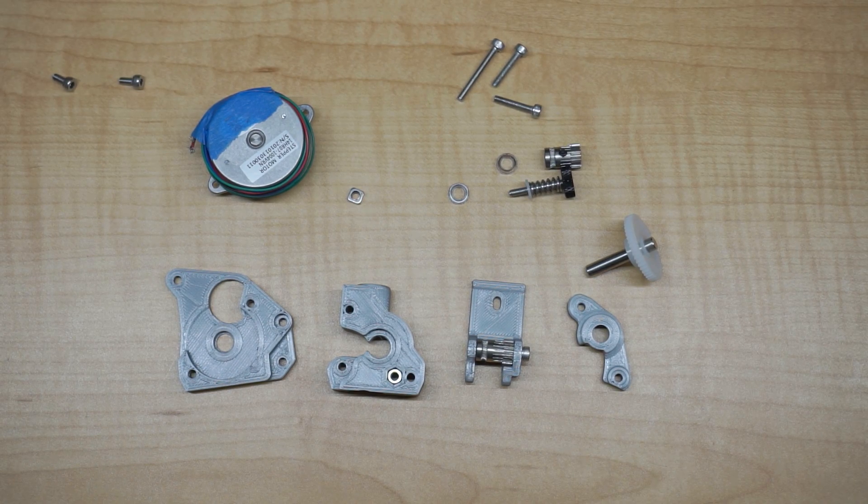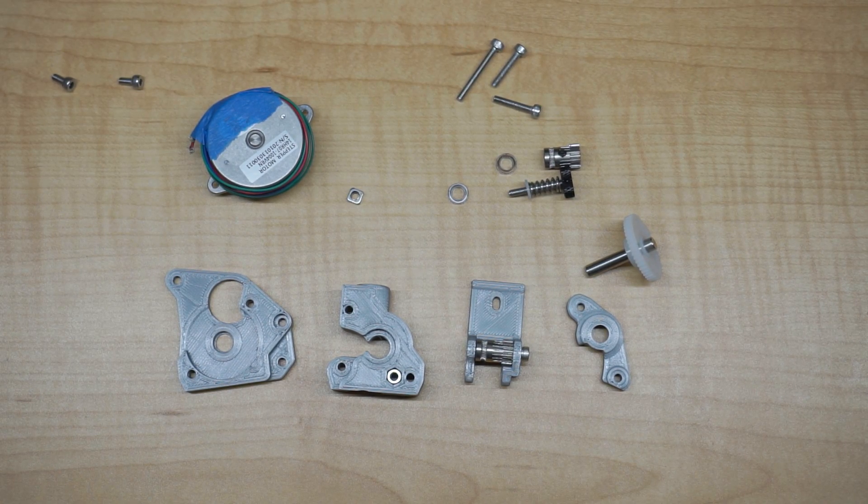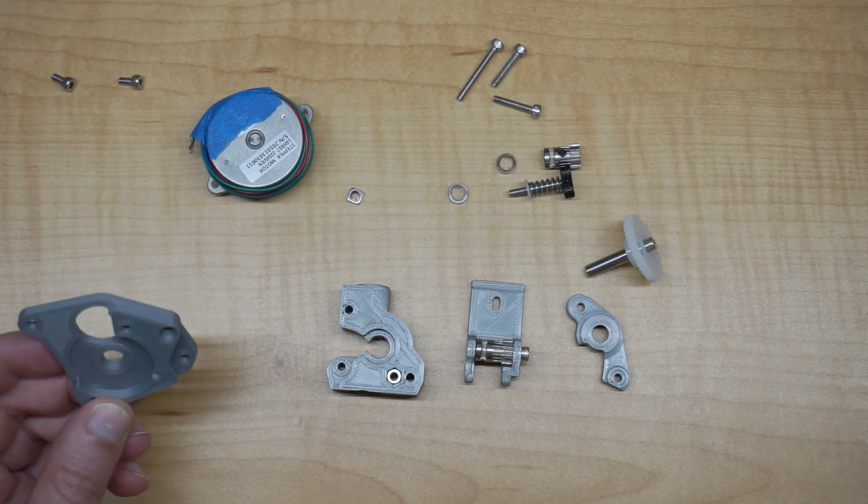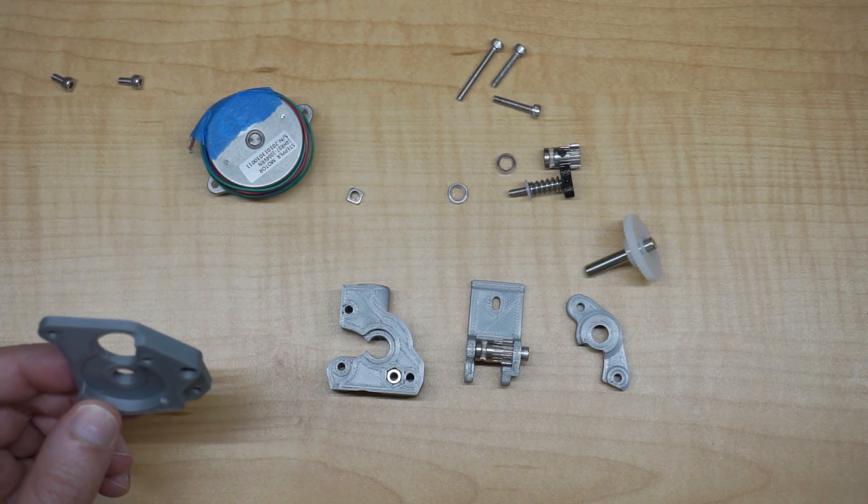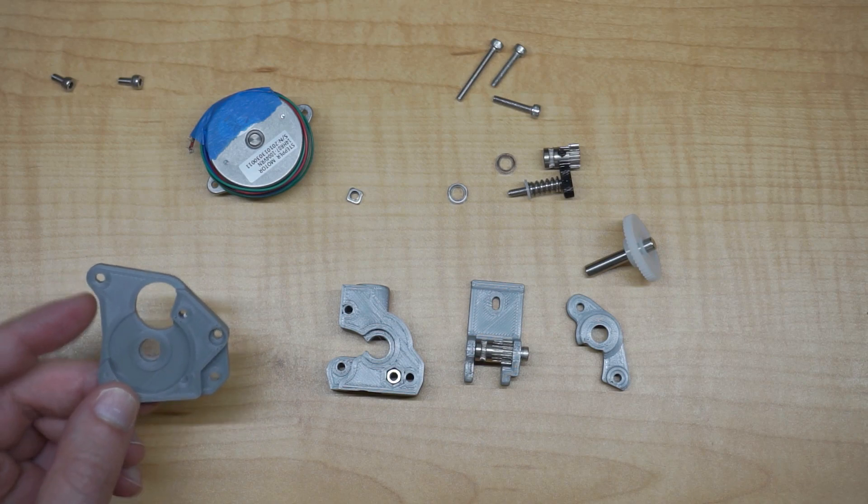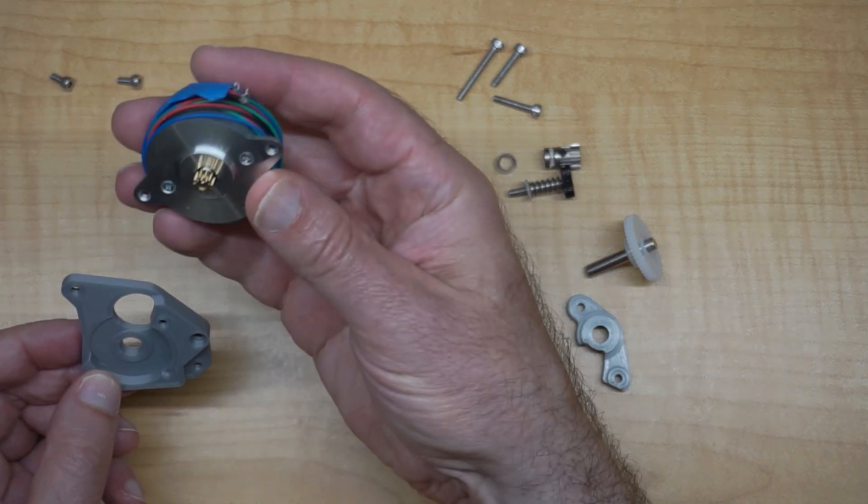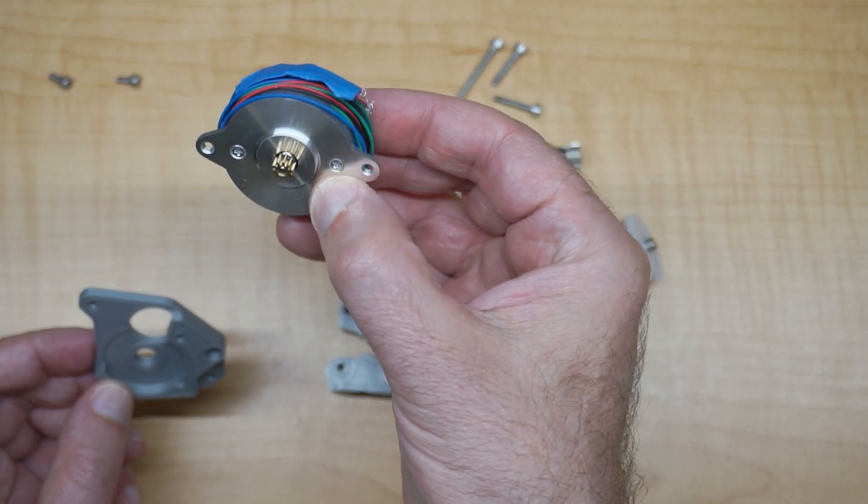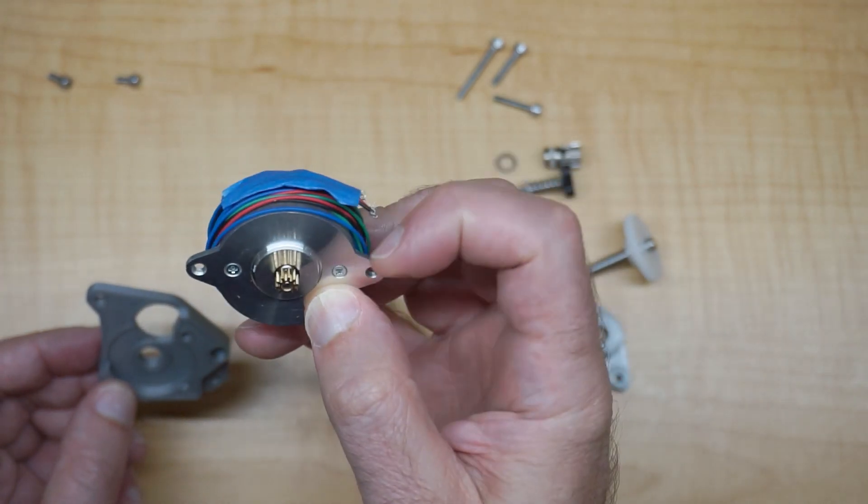There really aren't that many parts for this. We've got a backplate - this is what you're going to use to mount to your carriage as well as support the NEMA 14 pancake stepper that you're going to use.